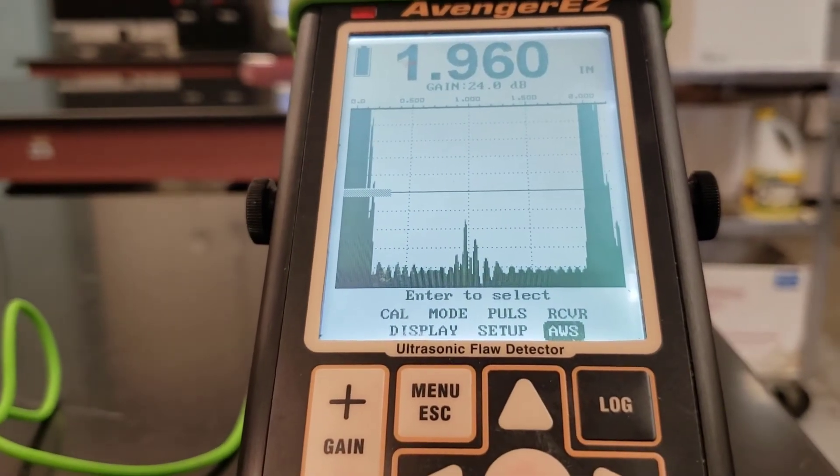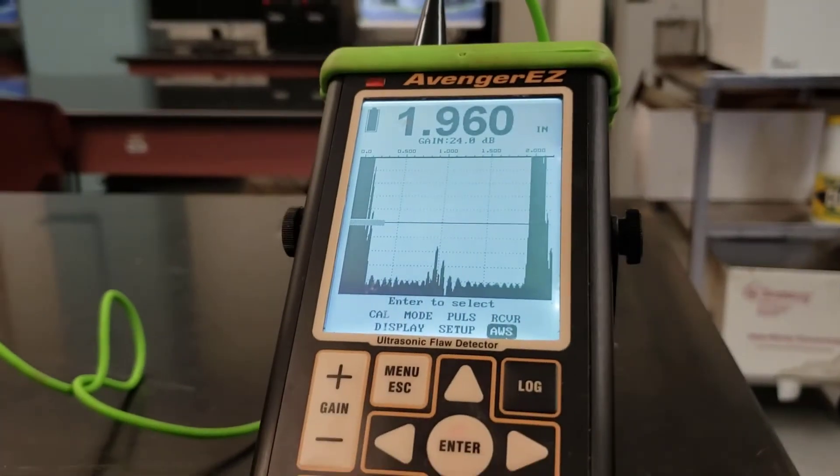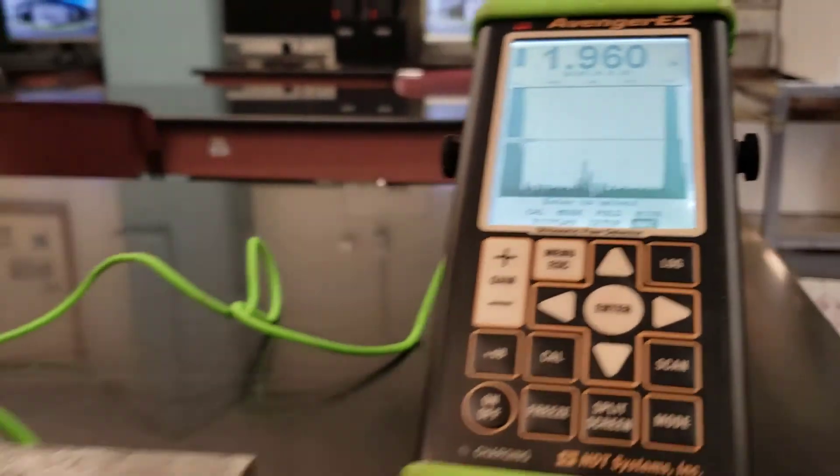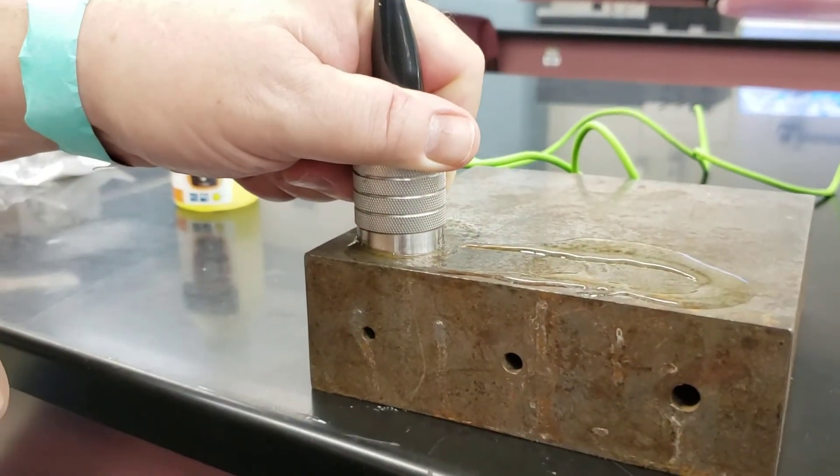So you're seeing some backscatter, some double signals here. What's going on there? Well, what's happening is this transducer is very wide. This is a tiny hole, so it's actually picking up two different portions of the surface there.